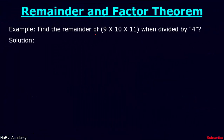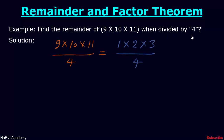Find the remainder of 9 × 10 × 11 when divided by 4. If we divide 9 by 4, we will get 1 as remainder, because 4 twos are 8 and the remainder will be 1. Similarly, dividing 10 by 4, the remainder will be 2. And further, dividing 11 by 4, the remainder will be 3.